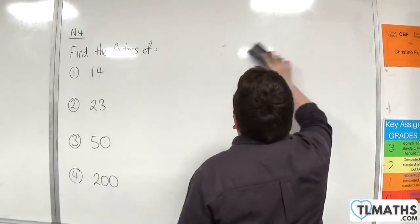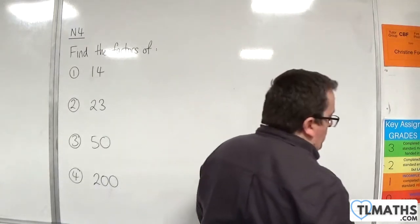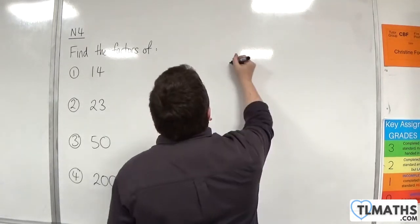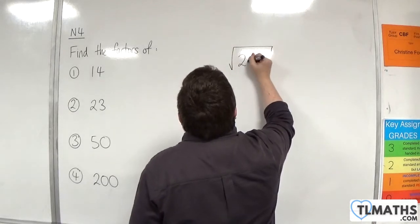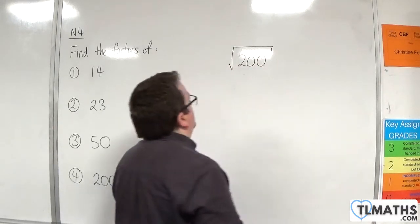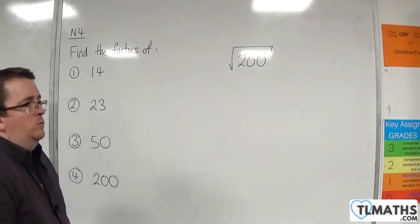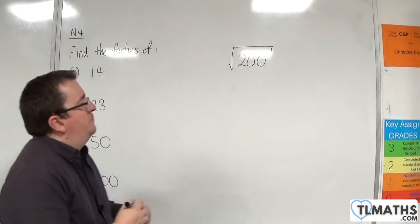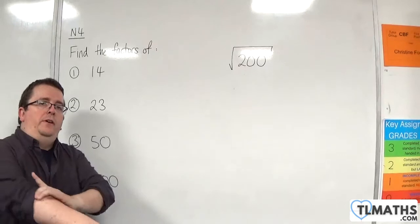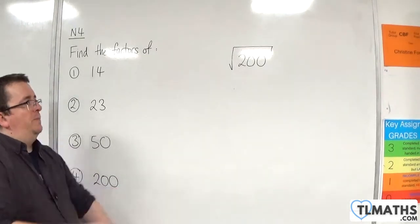Our last example is 200. Now, goodness. What is the square root of 200 between? This is really going to test the limits of your mental arithmetic now.